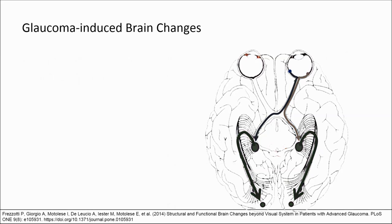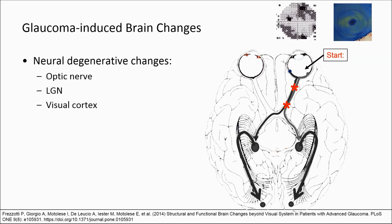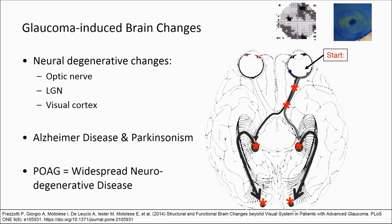In glaucoma, damage of the retinoganglionic cells starts at the optic nerve head. With slow degradation in the retinoganglionic cells and the geniculate cortical neurons, we start to see visual field defects and loss in the ganglion cell layer on OCT. With progression, there are neurodegenerative changes in the retrobulbar and intracranial optic nerve, lateral geniculate nucleus, and visual cortex. In very advanced primary open-angle glaucoma, the brain shows neurodegenerative changes similar to those of Alzheimer's disease and Parkinsonism. In reality, glaucoma is not an isolated ocular pathology but rather a widespread neurodegenerative disease.